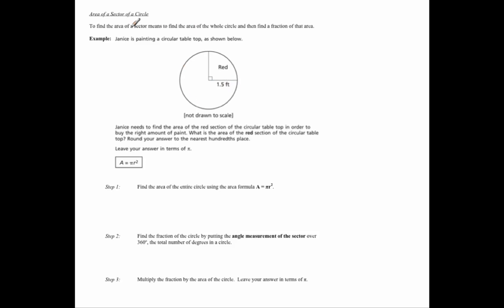The first step is we're going to look at the steps to figure out what we're going to do, and then we're going to read the question. The first step is to find the area of the entire circle using the area formula A equals pi r squared. We see this is the formula.